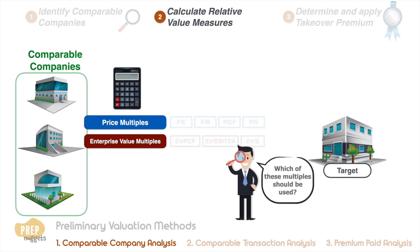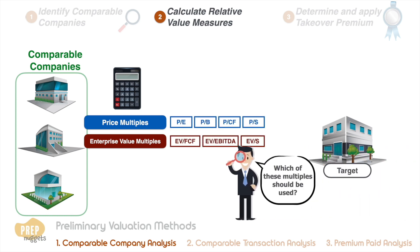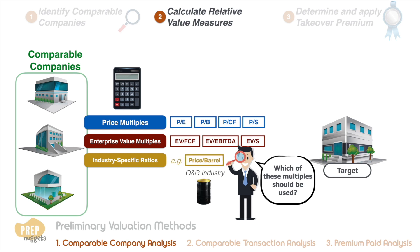The specific multiples that are appropriate for the analysis depend on the industry that the target company is in. In addition, industry-specific multiples may also be used. For instance, the price paid per barrel of oil can be a useful ratio to consider when analyzing companies in the oil and gas industry.